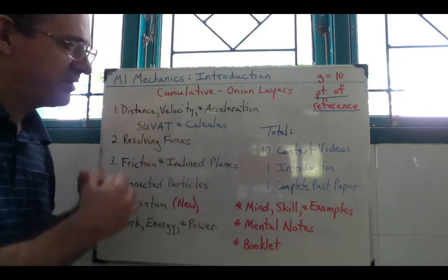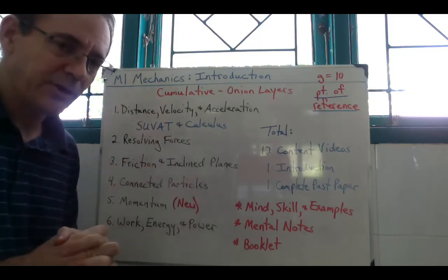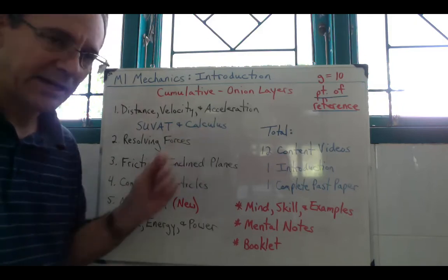In the first unit I do distance, velocity, and acceleration. In the old book it was chapter 1 and chapter 11. In the newer book it's chapter 1 and chapter 6. I include them together for a couple reasons. One, my students have already had Pure Maths 1, so they've already learned calculus.